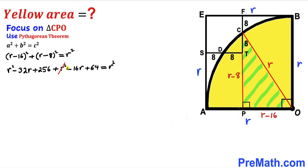We can see that r² cancels on both sides. Combining like terms gives us r² − 48r + 320 = 0. We now have a quadratic equation to solve for radius r.